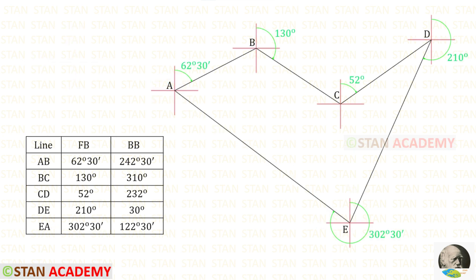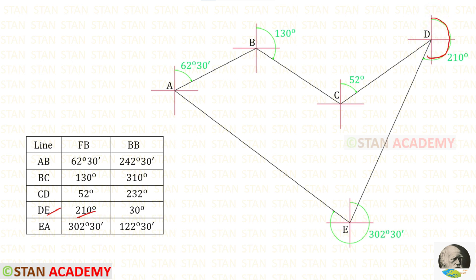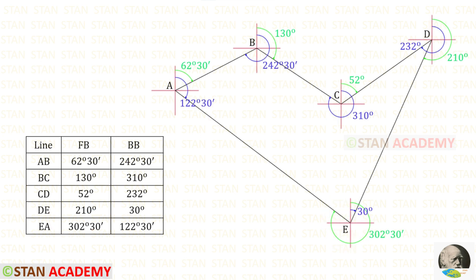Now let us enter the fore bearings and back bearings in the traverse. Fore bearing of AB is 62°30', BC is 130°, CD is 52°, DE is 210°, and EA is 302°30'. The back bearings are: AB — 242°30', BC — 310°, CD — 232°, DE — 30°, and EA — 122°30'.